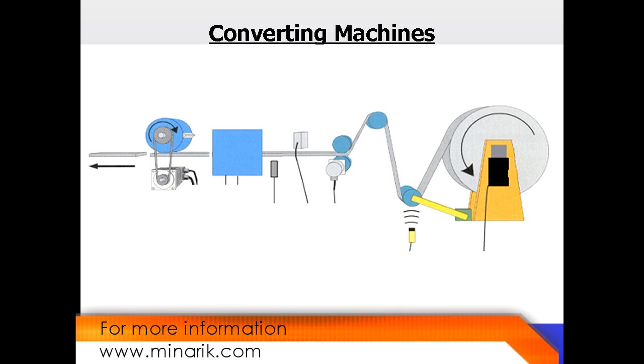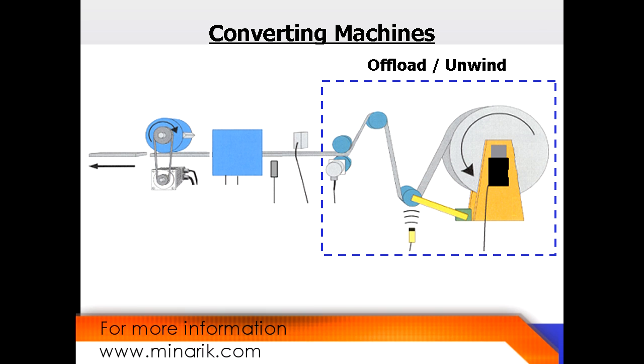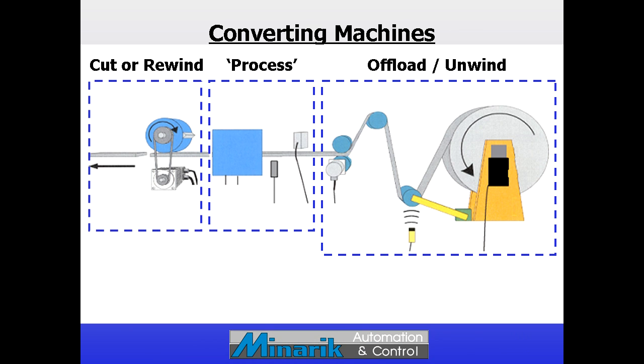Many products are created on some form of what are commonly called converting machines. Converting involves taking material from a bulk offload roll, indexing it into position, acting on it with some process, and then rewinding or cutting it to length.